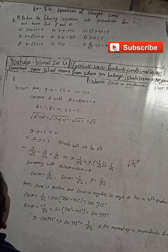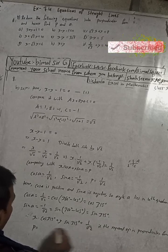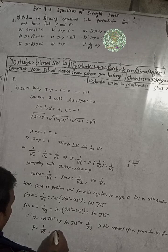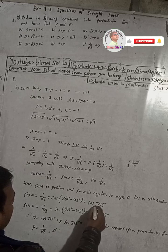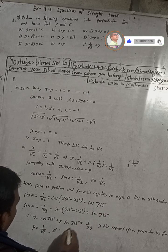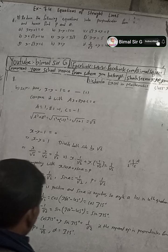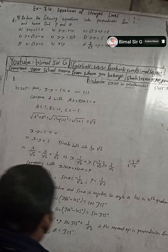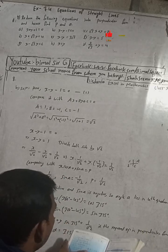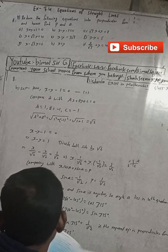So the final answer is: p equals 1 by root 2, and alpha equals 315 degrees. The required equation in perpendicular form is x cos 315 degrees plus y sin 315 degrees equals 1 by root 2. This is the correct answer.